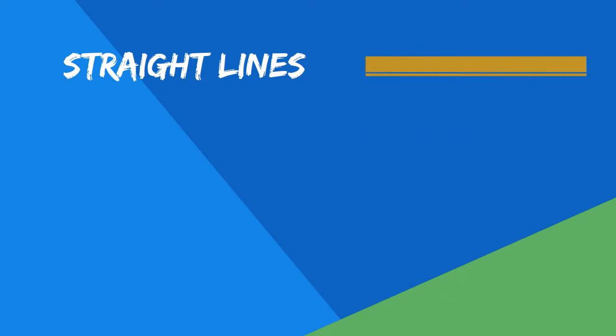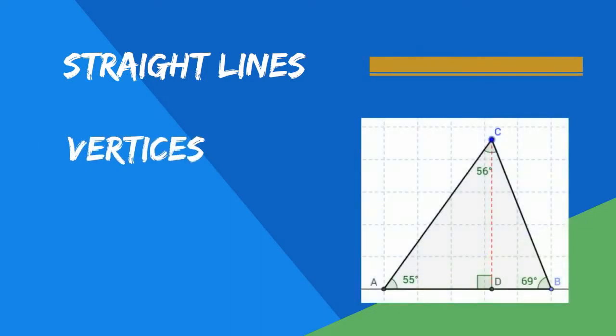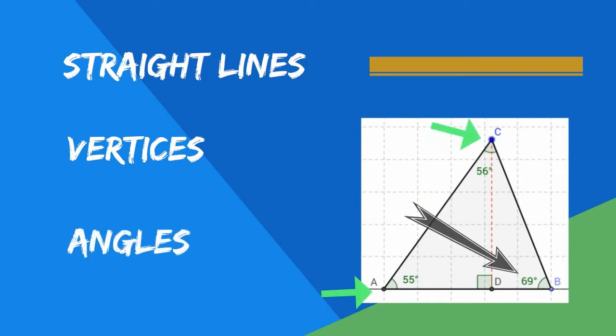Polygons have three parts: straight lines, vertices — which are the points at which the lines intercept — and angles formed by the intercepting lines.